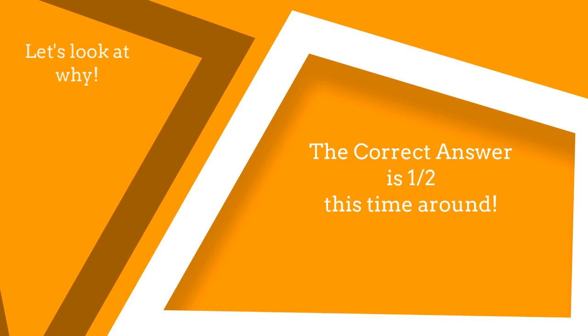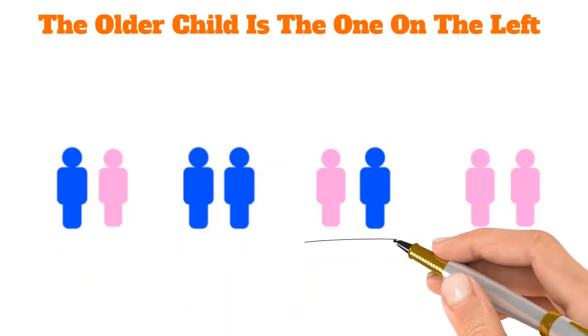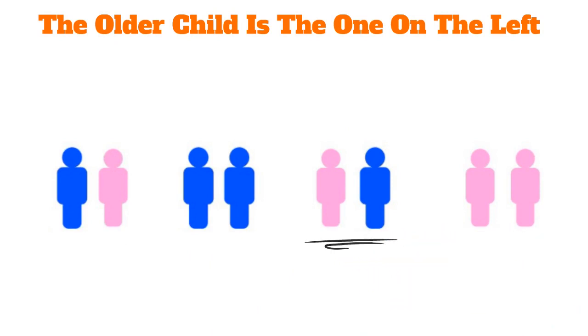The correct answer is one half this time around. Let's look at why. Once again, we have four possible combinations. The older child is the one on the left.